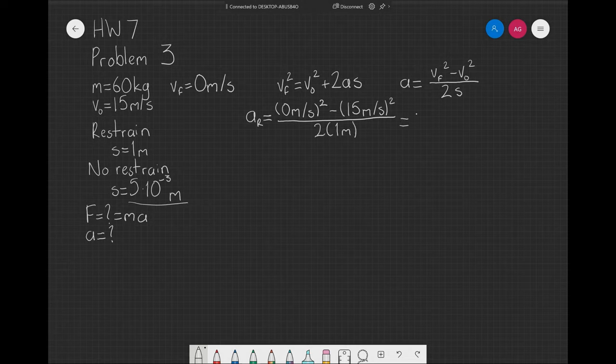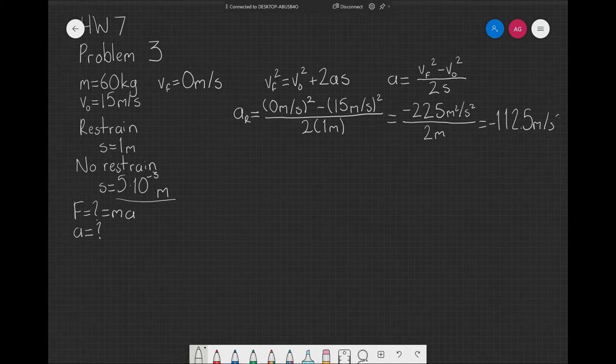In this case, you have negative 225 m squared per second squared over 2 m is equal to negative 112.5 m per second squared.